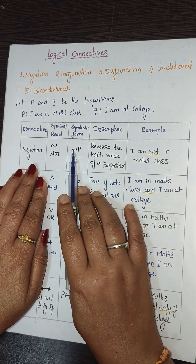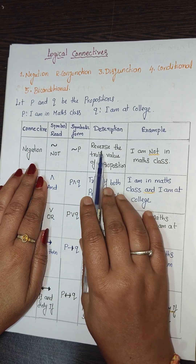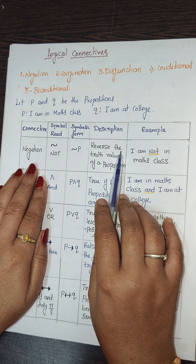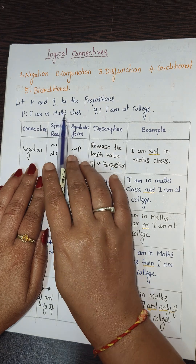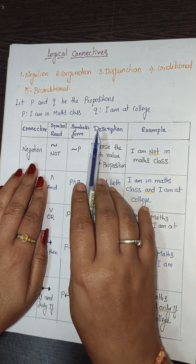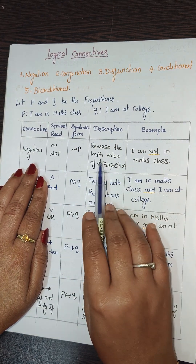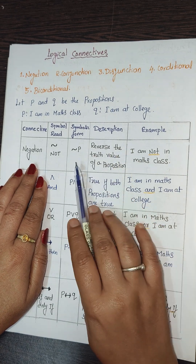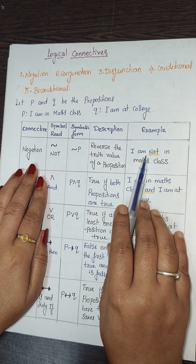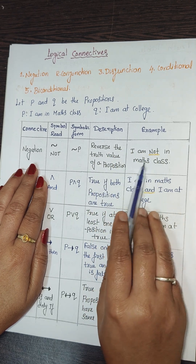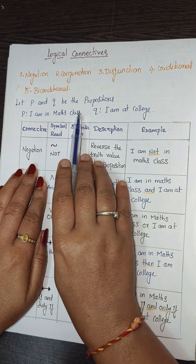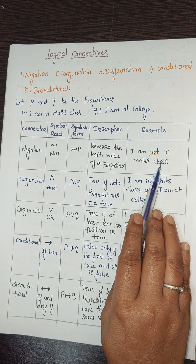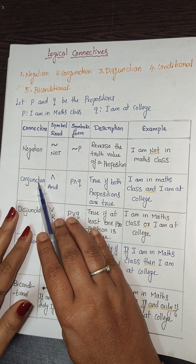Negation reverses the truth value of a proposition. If p is true, then ¬p is false, and if p is false, ¬p is true. For example, if p is 'I am in a maths class,' then ¬p is 'I am not in a maths class.'